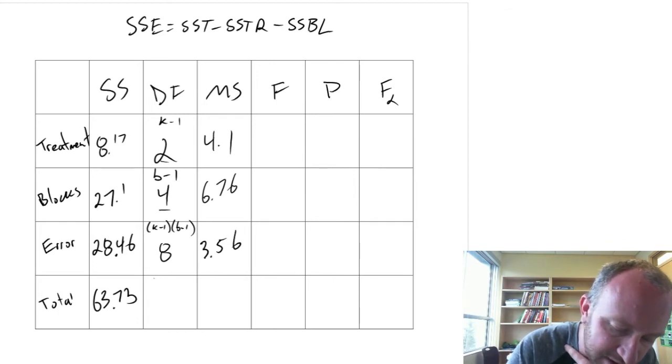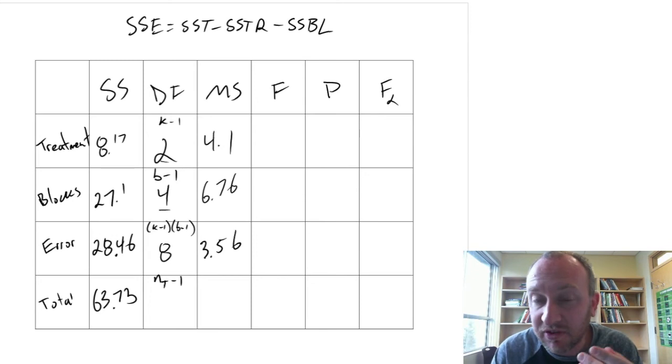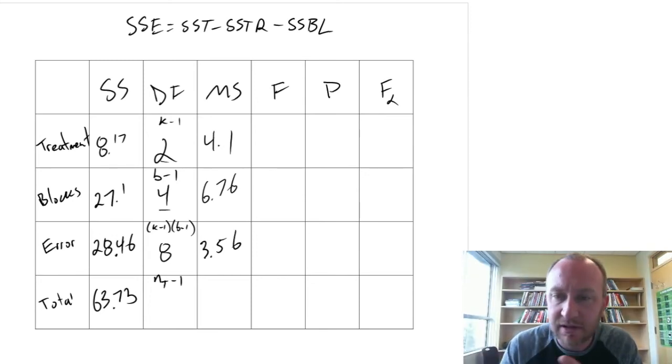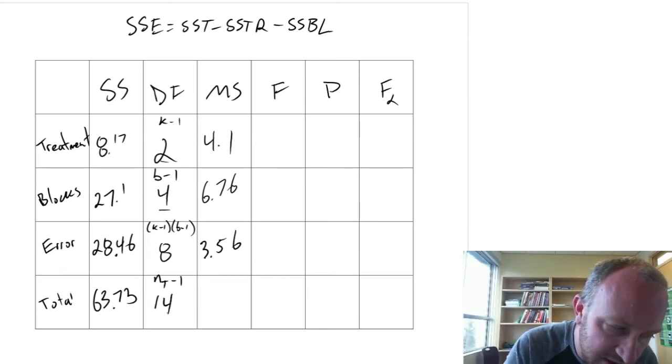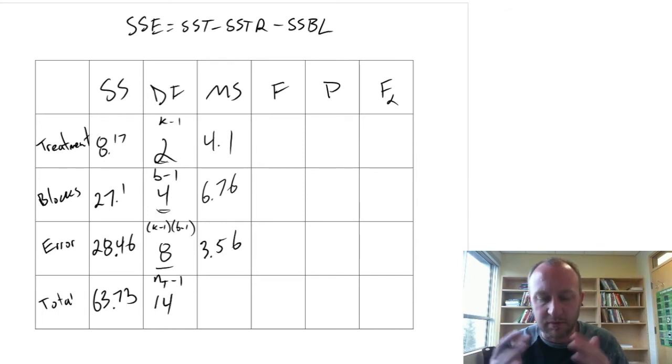Okay. And last but not least, our degrees of freedom here. NT minus 1. NT was 15 observations. Minus 1 is 14. Which is also 8 plus 4 plus 2. So everything works out.